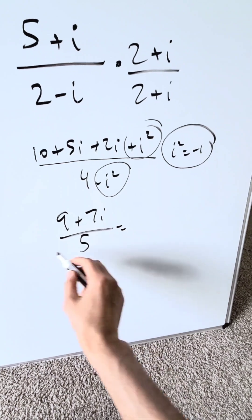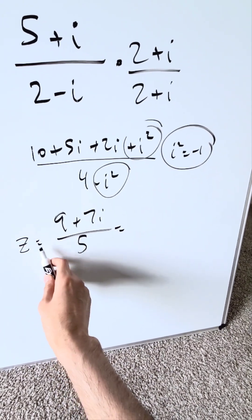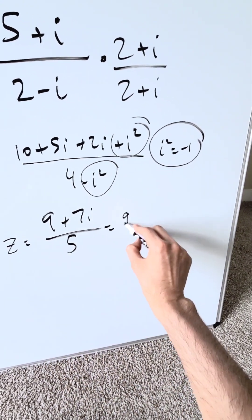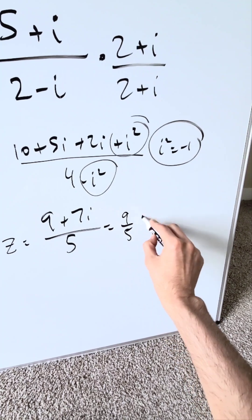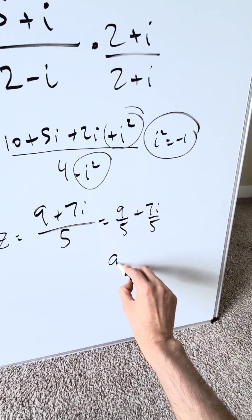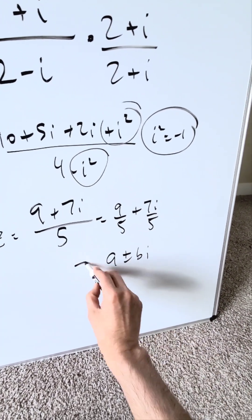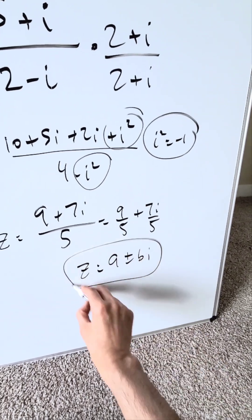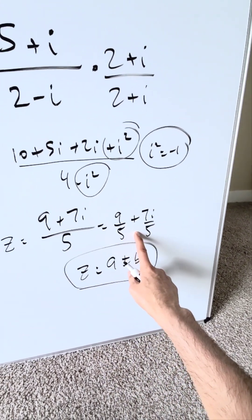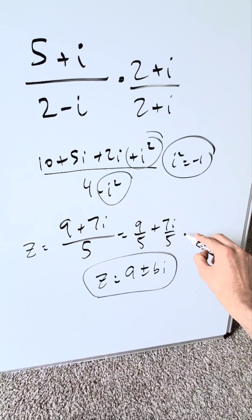Separate these out. Your complex number after you evaluate it is z equals 9 over 5 plus 7i over 5. This is of the form a plus bi, where z equals your complex number representation. This answer is correct: 9 over 5 plus 7i over 5, and I'm happy with this answer.